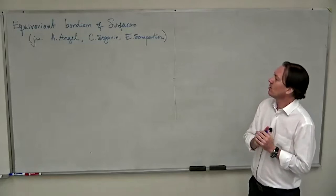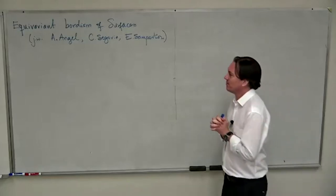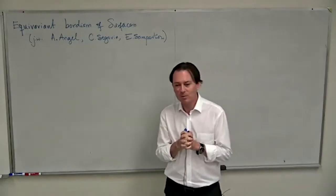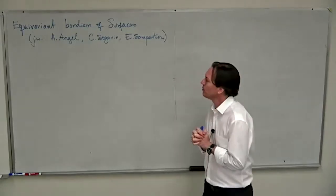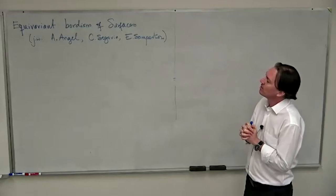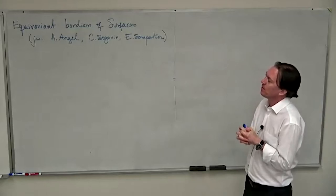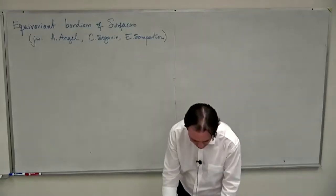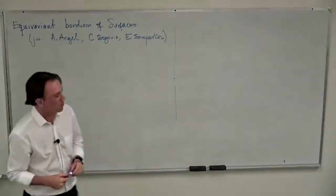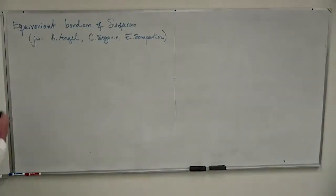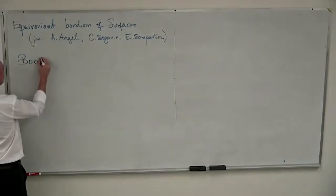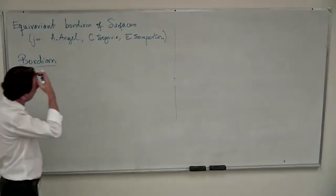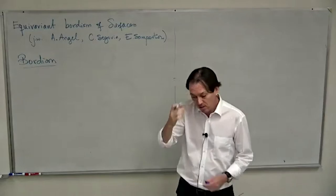The subject I'm going to present is a very classical subject. Bordism is one of the many success stories in algebraic topology — the calculation of the bordism groups of manifolds — and I will put an extra twist, which is bordisms whenever there is a group acting on the manifolds. But before going there, let me just give an idea for the people who don't recall what bordism is.